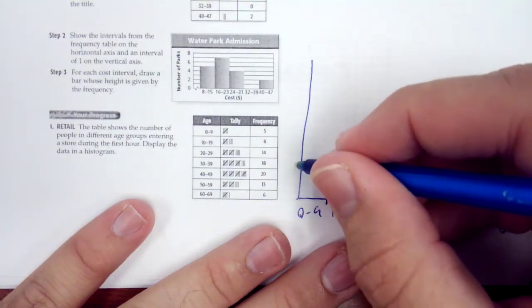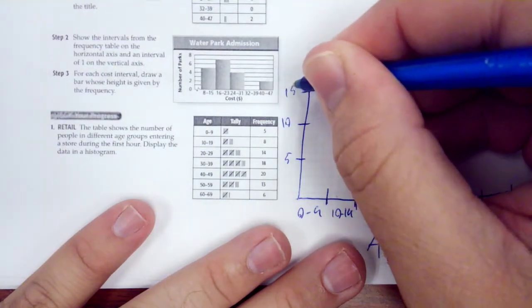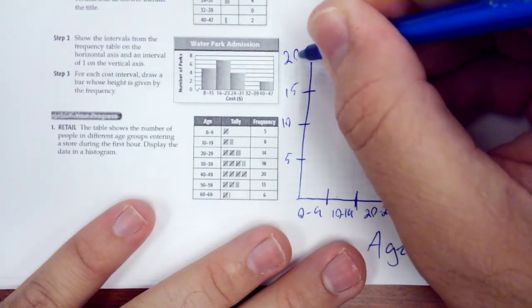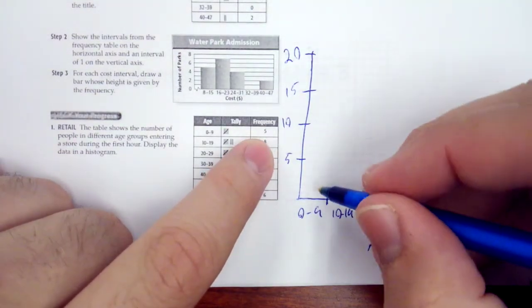Our highest one is 20, so I'm going to go 5, 10, 15, and 20. Okay, so I have 5.